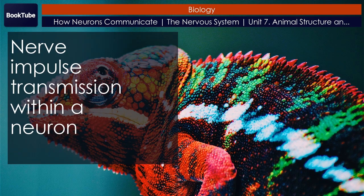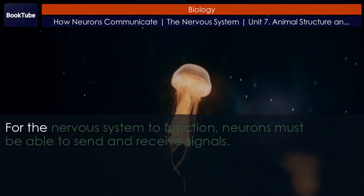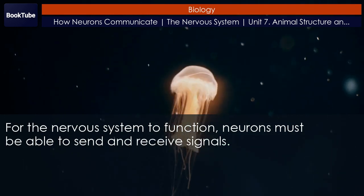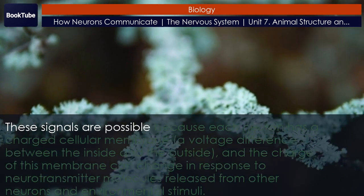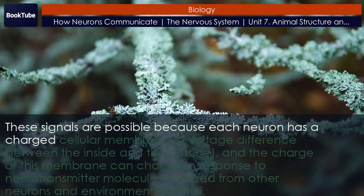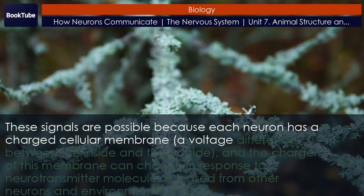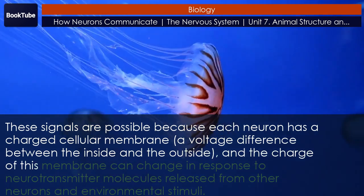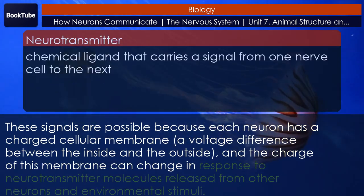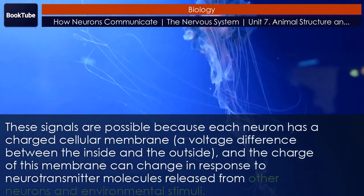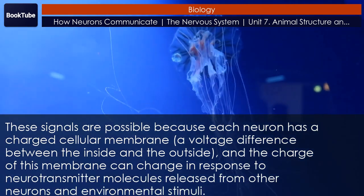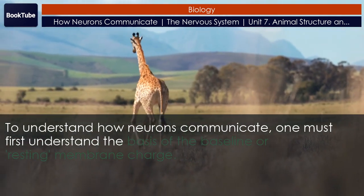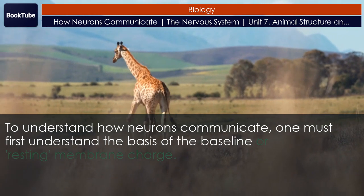Nerve impulse transmission within a neuron. For the nervous system to function, neurons must be able to send and receive signals. These signals are possible because each neuron has a charged cellular membrane — a voltage difference between the inside and the outside — and the charge of this membrane can change in response to neurotransmitter molecules released from other neurons and environmental stimuli. To understand how neurons communicate, one must first understand the basis of the baseline or resting membrane charge.